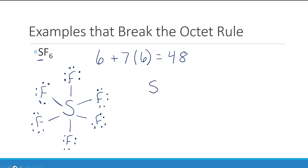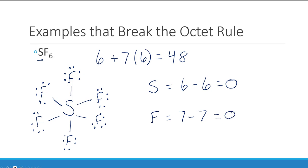Let's do our formal charges for SF₆ as well. Sulfur came from the periodic table with six valence electrons and it has six bonds and zero lone pairs, so it gets one electron from each bond, giving it six electrons and a formal charge of zero. Fluorine has seven valence electrons and seven electrons in this structure, giving a formal charge of zero. This is true for each of the six fluorines.